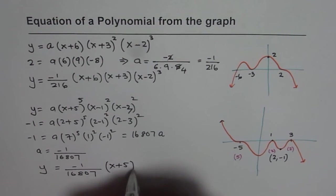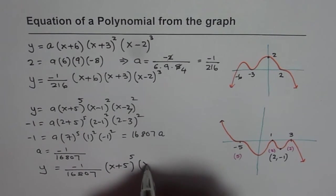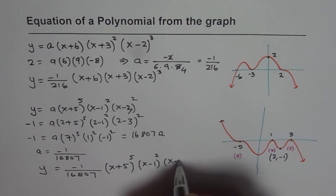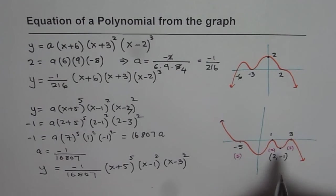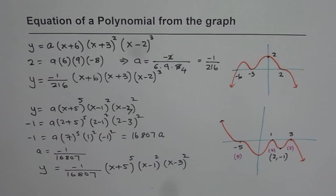x plus 5 to the power of 5 times x minus 1 to the power of 2 and x minus 3 square. So I made that correction. It was 3. I should have written 3 here and then we get our equation.